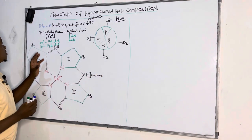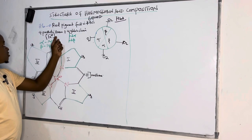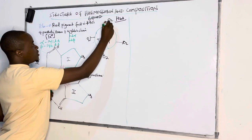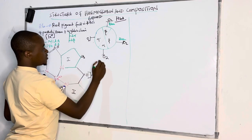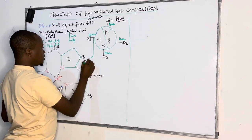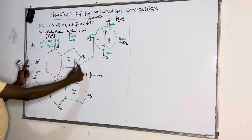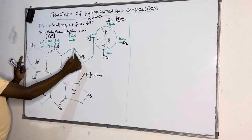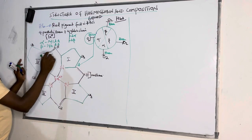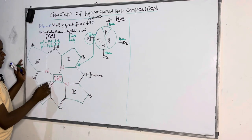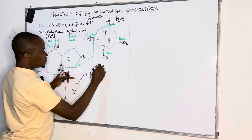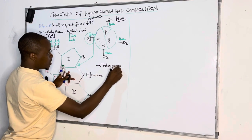The structure of hemoglobin has four prosthetic heme groups with iron at the center. Looking at the zoomed diagram: this is the first heme, the second heme attached, the third heme group, and the fourth heme group. The structure of one heme has iron at the center surrounded by a tetrapyrrole ring.